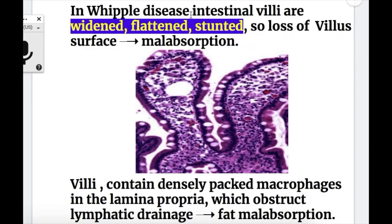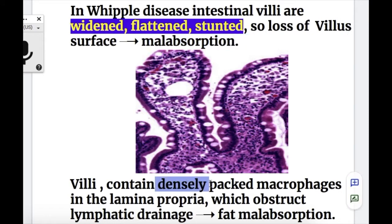In Whipple's disease, intestinal villi are widened, flattened, and stunted. So there is loss of villus surface that leads to malabsorption. Villi contain densely packed macrophages in the lamina propria, which obstruct the lymphatic drainage, leading to fat malabsorption.